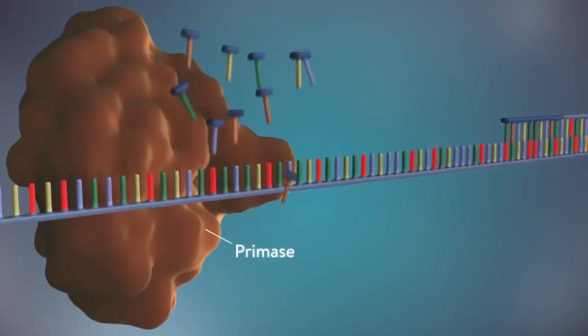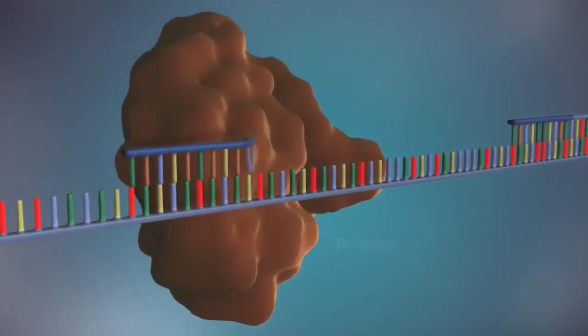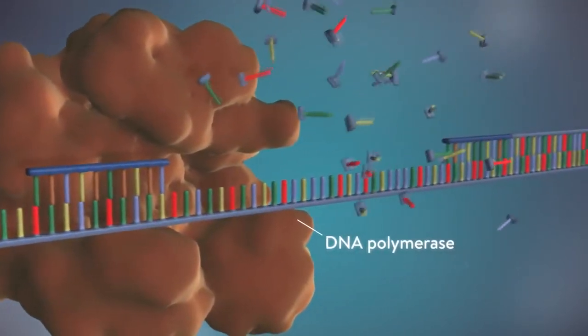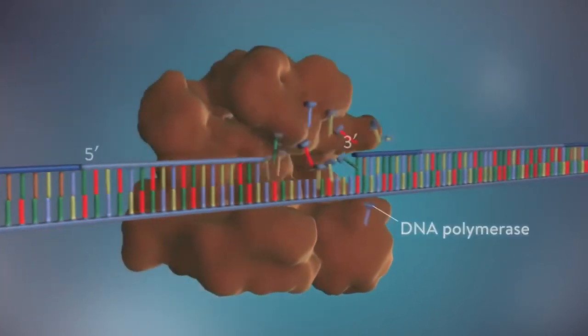The next primer is then added further down the lagging strand. Another Okazaki fragment is then made and the process is repeated again.